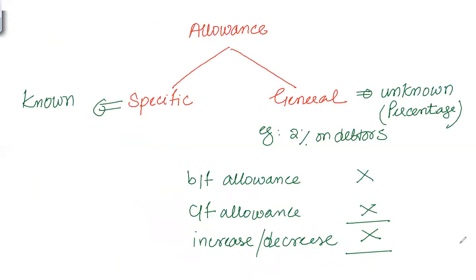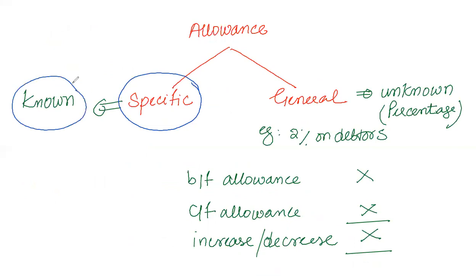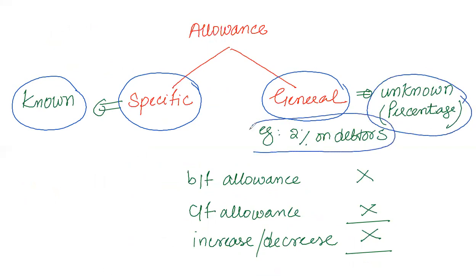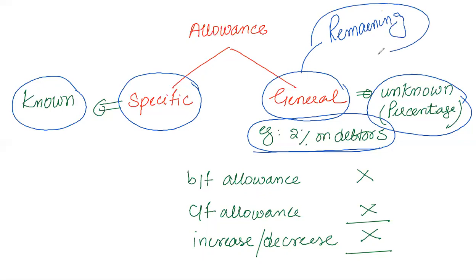This allowance is created on the year-end receivables balance, and it is of two types. It might be a specific allowance, where you have doubt about a particular customer. Or it might be a general allowance, which is calculated on a past-experience basis — usually a percentage basis, such as 2% of the remaining debtors. Remember that first we deduct the specific allowance from receivables, and on the remaining balance we apply the general allowance percentage to calculate the total allowance, which is the sum of both specific and general allowance.